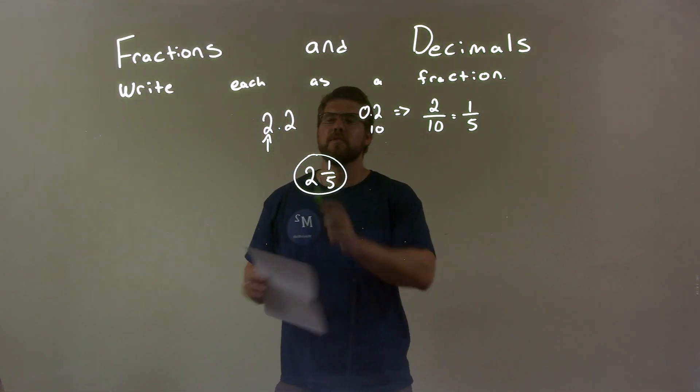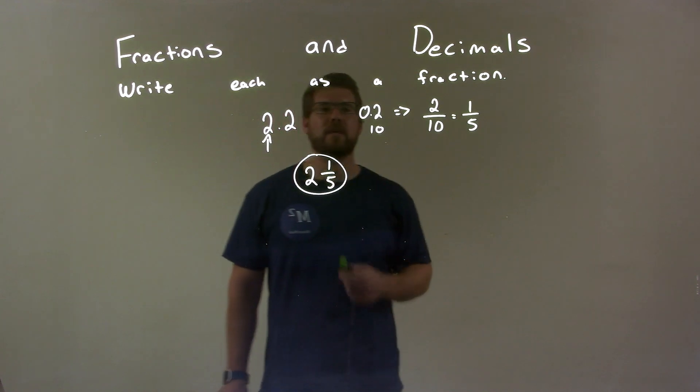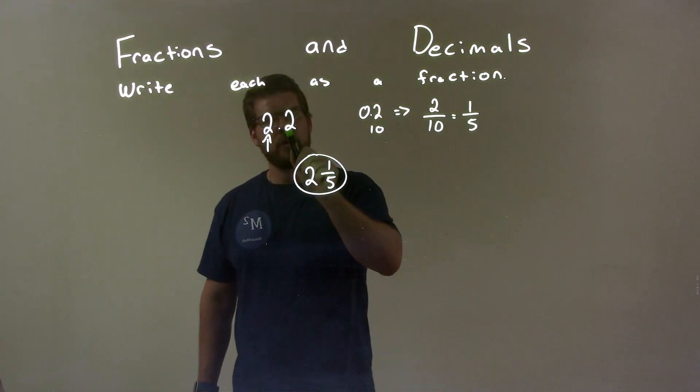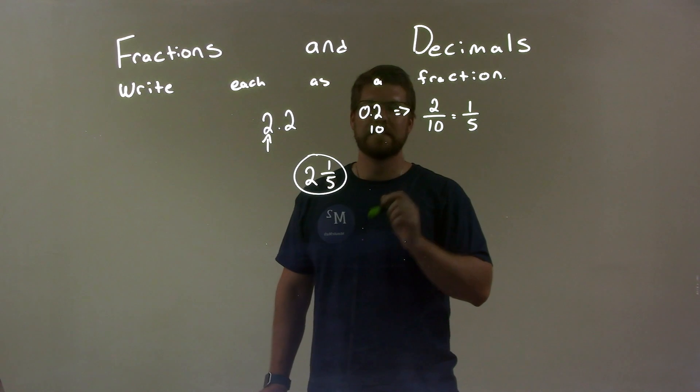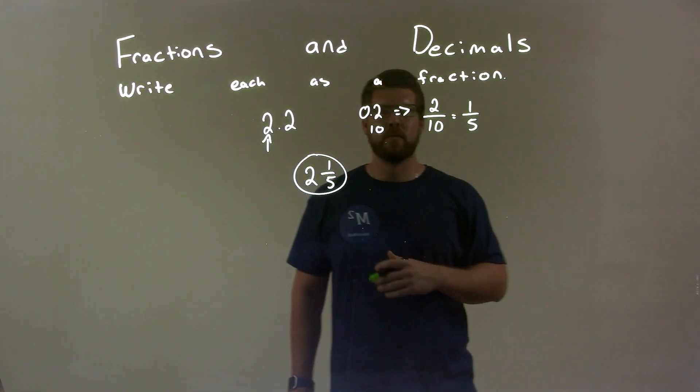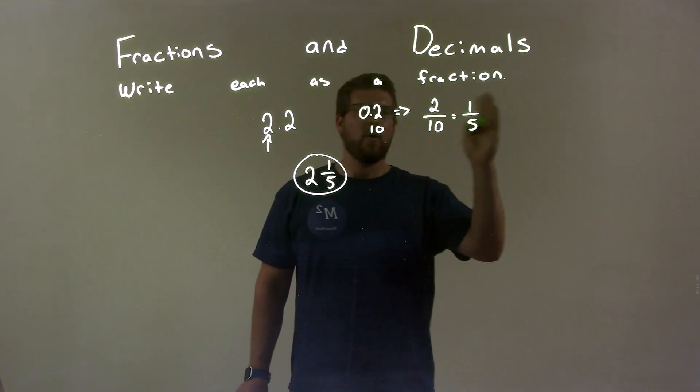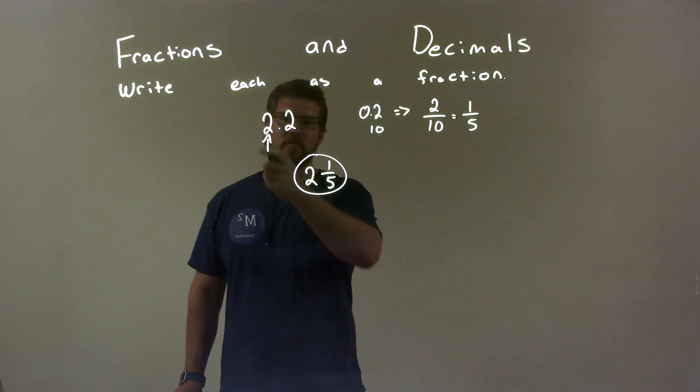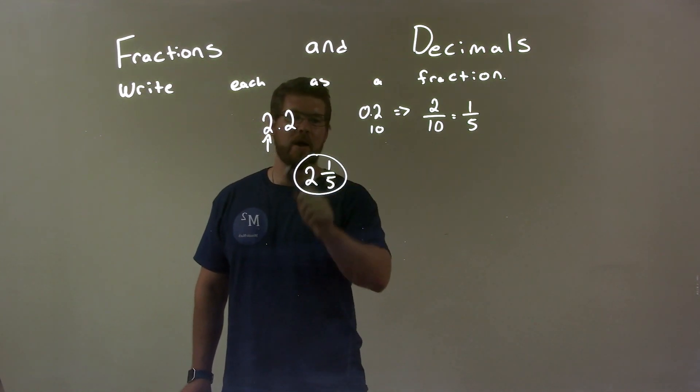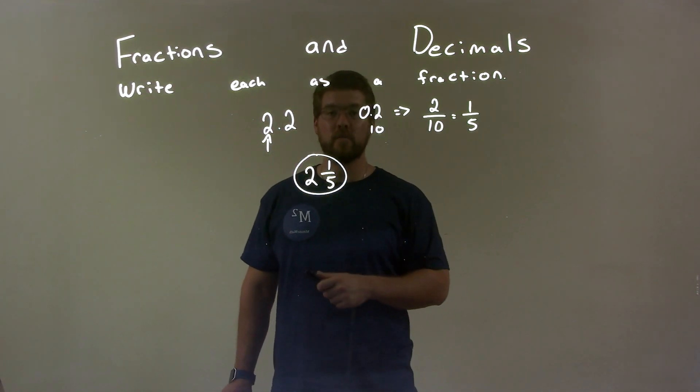So quick recap. We're given 2.2, and we get to write that as a fraction. I deal with the decimal part of 0.2, and that's the same thing as 2 over 10. Well, 2 over 10 simplifies to be 1 fifth. 1 fifth gets combined with the first two that's out there, and so our fraction final answer is 2 and 1 fifth.